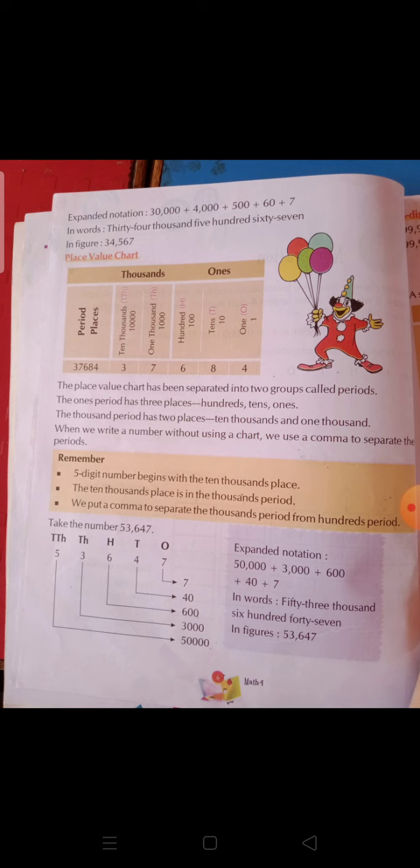We put a comma to separate the thousands period from the hundreds period. In the ones period there are three things: ones, tens, and hundreds. In the thousands period we get one thousand and ten thousand. When we separate the thousands from the hundreds, we use a comma.